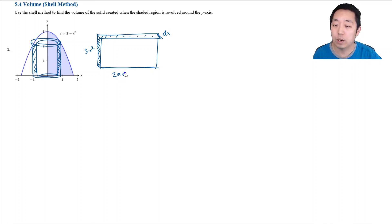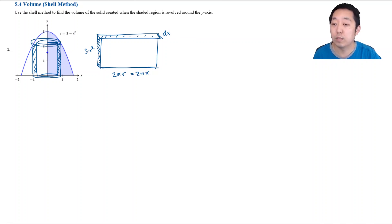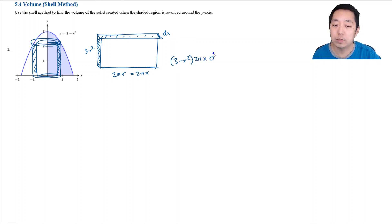The height is the y-value of this curve, which would be 3 minus x squared. This length, because I unrolled it, would be the circumference of the circle: 2π times the radius. The radius here is the x-value — the distance from the y-axis — so we say 2πx. The volume is therefore (3 minus x squared) times 2πx times dx.